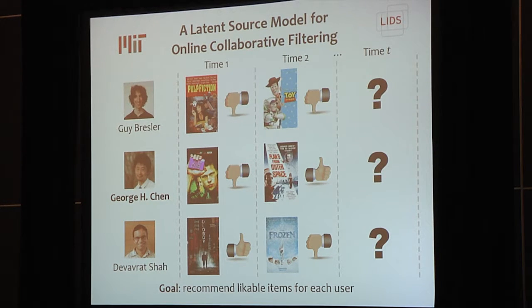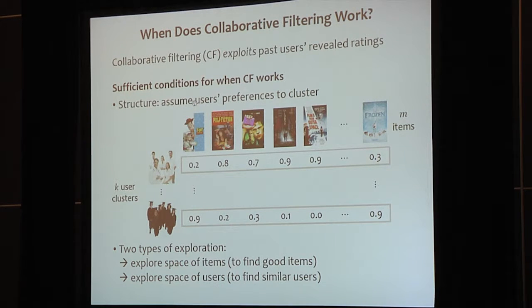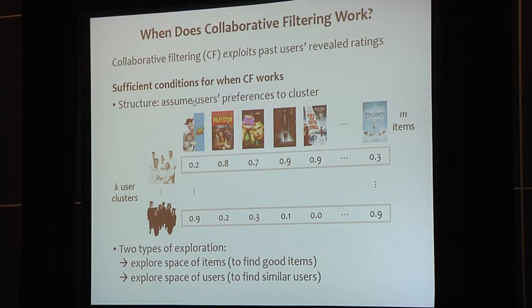The question is: how do you use what knowledge you already know about the users to recommend an item? What's often used in practice is collaborative filtering. A key question we want to answer is when does collaborative filtering work well? In its simplest form, collaborative filtering figures out what item to recommend to a user by looking at similar users. For example, if Alice is similar to Bob and Bob likes apples, then maybe Alice likes apples too.